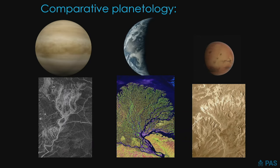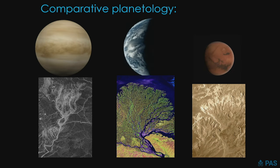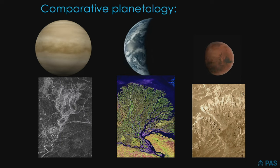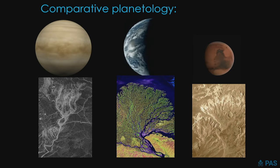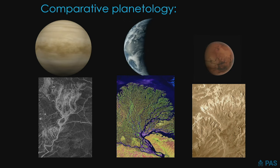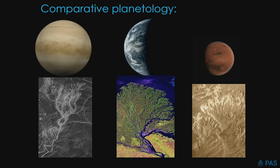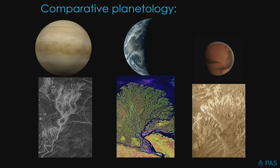One of our very powerful tools is comparative planetology. Now that we've been able to study many of the planets of our solar system up close, we look at the similarities and differences and we learn a lot. One thing you quickly learn is that there's a certain similarity of form and structure and function that nature chooses in different environments using the materials at hand.